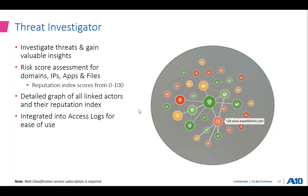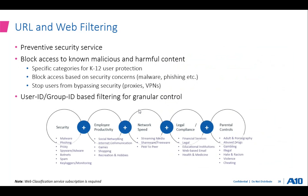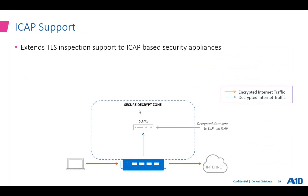We also have URL and web filtering, which is straightforward. You can match by category, SNI, certificate issuer, or certificate subject. As mentioned, we have around 83 categories. You can block malicious content from identified risky websites easily, and you can get granular control by user ID and group ID to create filters.